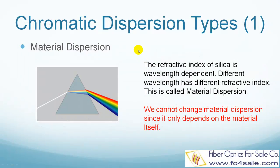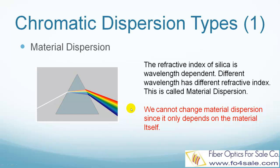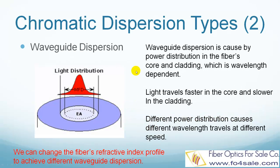Chromatic dispersion is actually the sum of two different dispersion types. The first type is called material dispersion. This is because the refractive index of silica — the material used to make optical fiber — is frequency dependent, so different frequency components, meaning different wavelengths of light, travel at different speeds in silica. Material dispersion depends on the material's built-in refractive index, and we cannot change that. The second type is called waveguide dispersion.